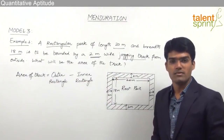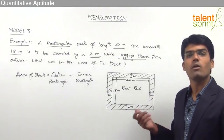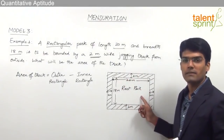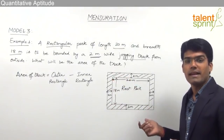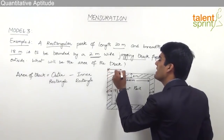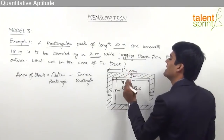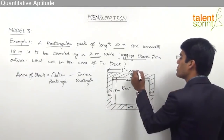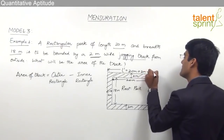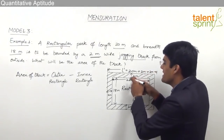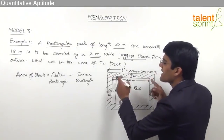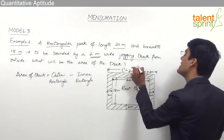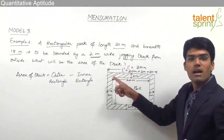Area of a rectangle is length times breadth. For the inner rectangle, the length and breadth are directly 20 and 18 meters as this is the rectangular park. For the outer rectangle, the length L' will be equal to 20 meters plus 2 meters extension on the right side and 2 meters extension on the left side — that is 20 + 2 + 2 = 24 meters.